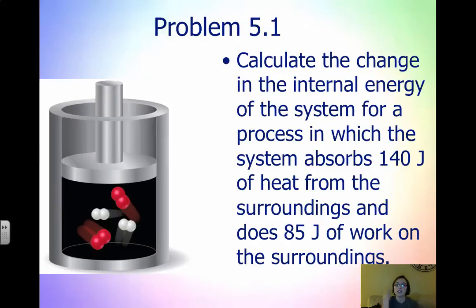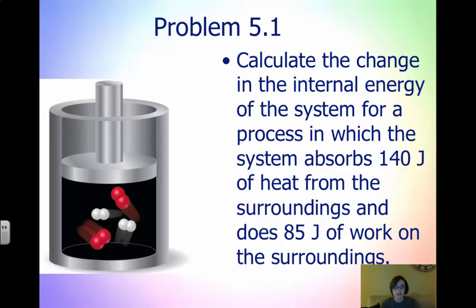Here's an example problem: calculate the change in the internal energy of the system for a process in which the system absorbs 140 joules of heat and does 85 joules of work on the surroundings. Take a second, look back at your notes, think about Q, W, and delta E. See if you can assign the correct signs and calculate delta E. Pause it here, see if you can solve it, and then come back.